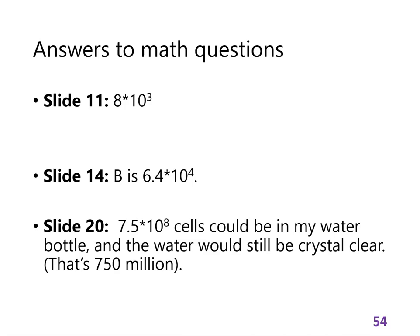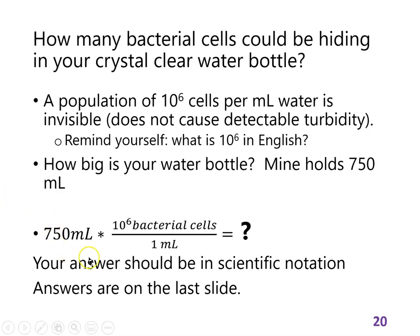Remember, you can hide something like 10⁶ cells in one milliliter of water and it's invisible — there aren't enough cells to scatter light in a detectable way; they're too small and spread out. If you see something as cloudy as the bottle I showed you, that would be more like 10⁸ or 10⁹ cells per milliliter — roughly a billion cells per milliliter, a hundred or a thousand times more than 10⁶.